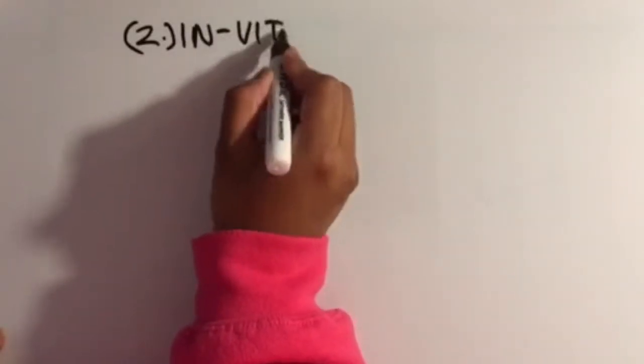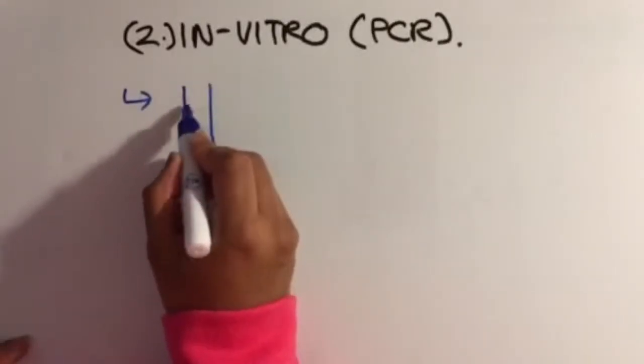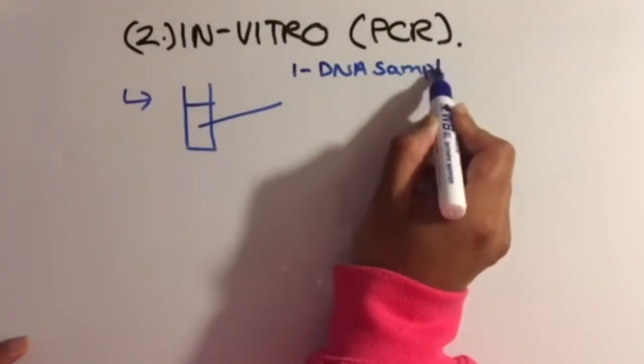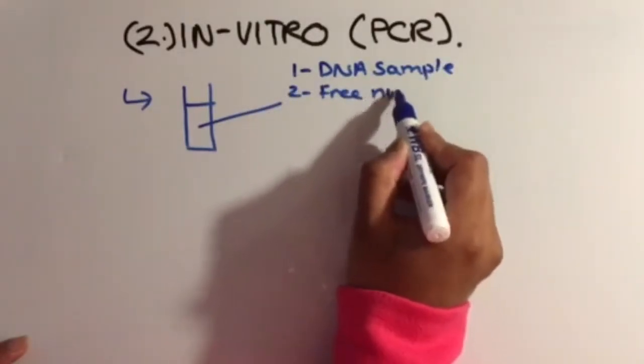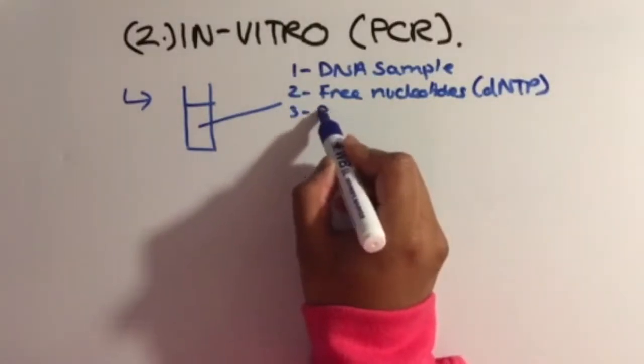Now let's look at in vitro techniques such as PCR. Firstly, a cuvette containing primers, DNA sample, free nucleotides known as dNTPs, and DNA polymerase are added together.